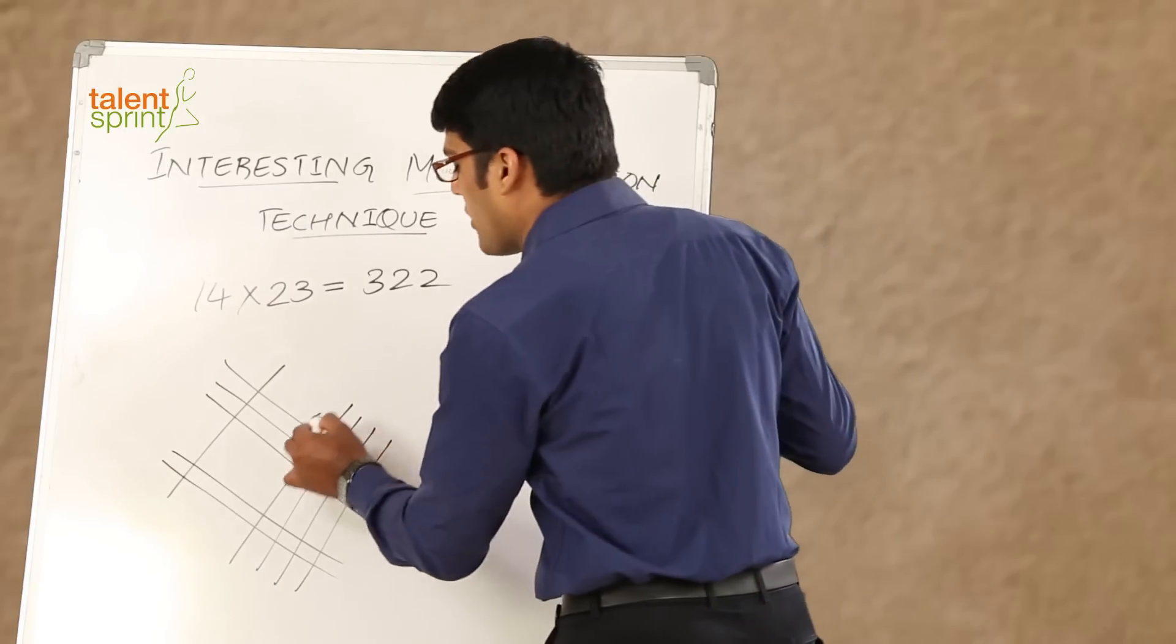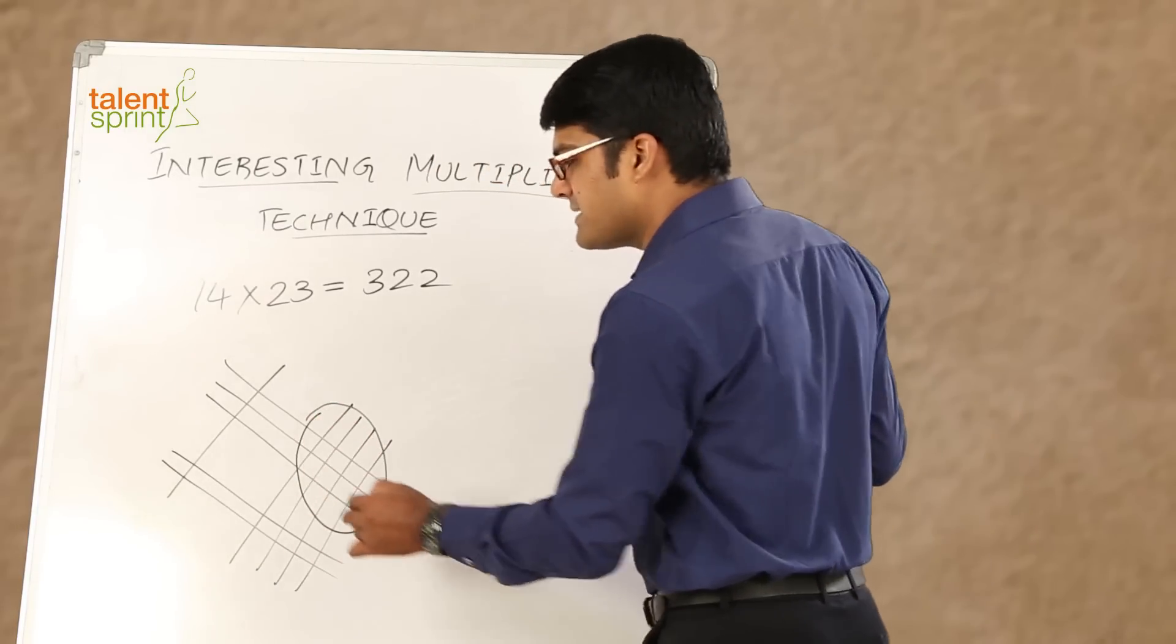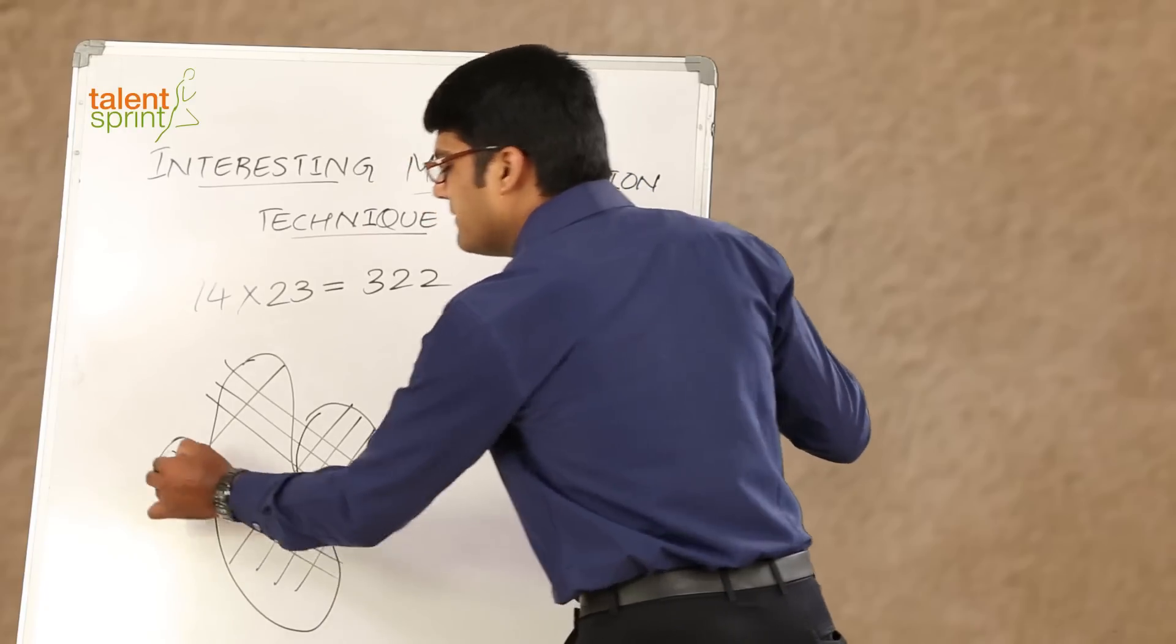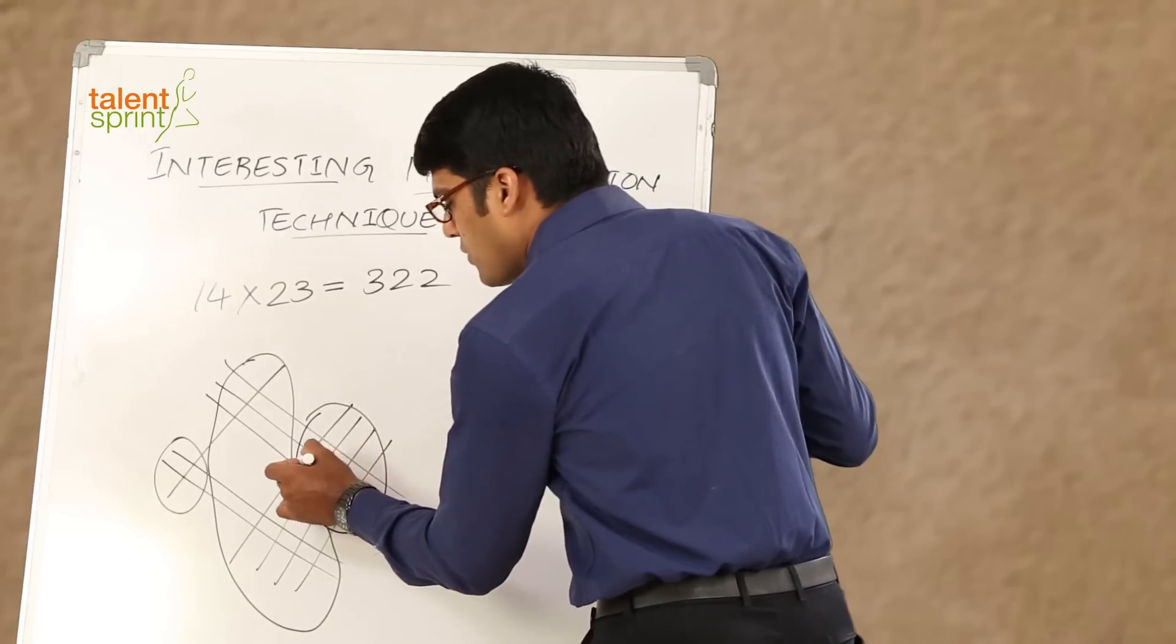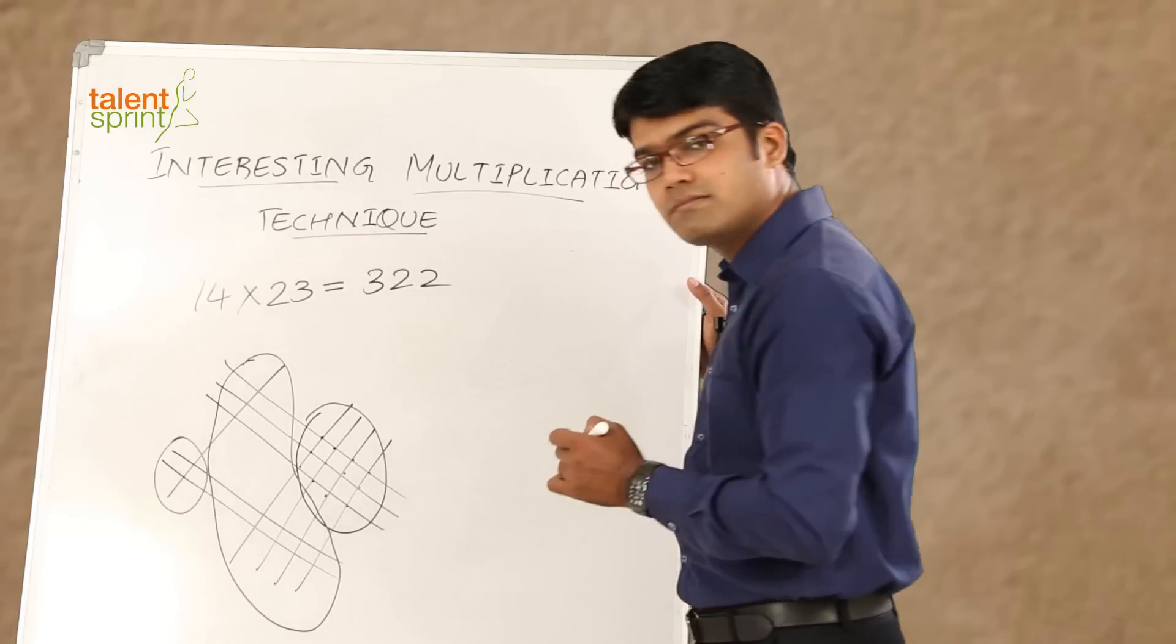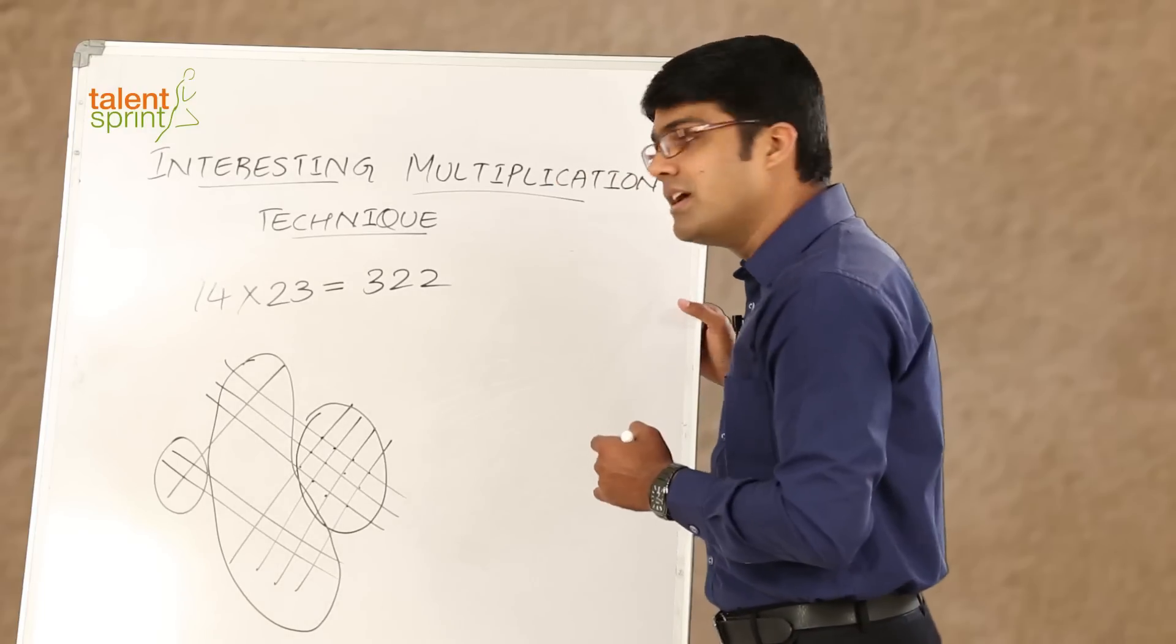Now how do we get the answer with the help of points of intersection? So this gives us the unit place, then the next two sets gives us the tens place, and finally we have the hundreds place. So count the points of intersection here: 1, 2, 3, 4, 5, 6, 7, 8, 9, 10, 11, and 12. 12 points of intersection.